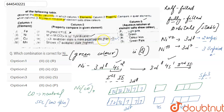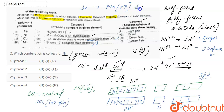Next: nickel shows +7 oxidation state as the highest — this is incorrect, because in the 3d series only manganese can show the +7 oxidation state as the highest. So the correct properties of nickel are the second and third.